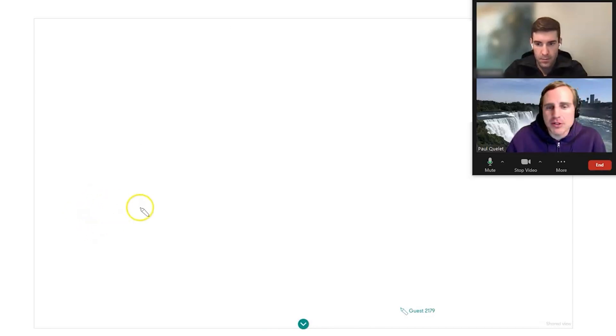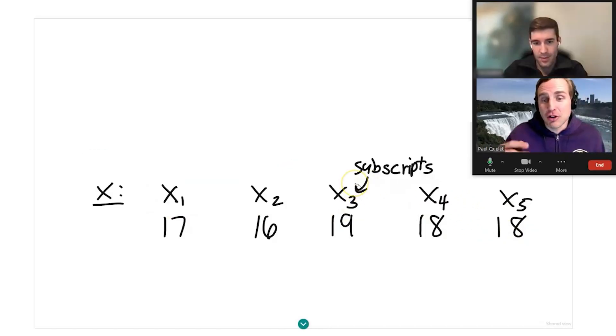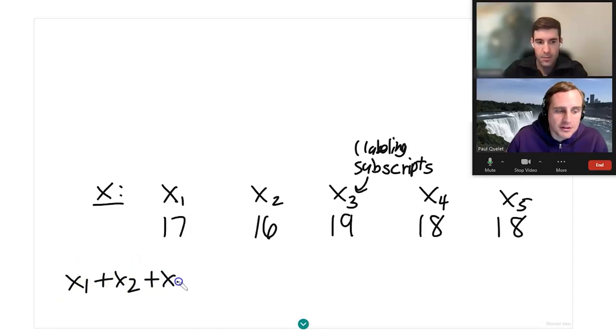So like for instance, suppose I had five data values and let's say these were scores out of 20 on a multiple choice exam. One person got 17, another person got 16, another person got 19, another person got 18, another person got 18. In math, we often label these using subscripts. Now the reason I mentioned that to you is because suppose I wanted to add all these together. I could certainly say X1 plus X2 plus X3, but if you can imagine, suppose instead of five data points, I had a hundred data points. That would be very cumbersome to write it out. So what we often do in math, we say, let's let it be XI.